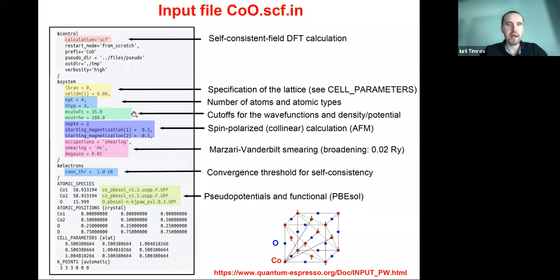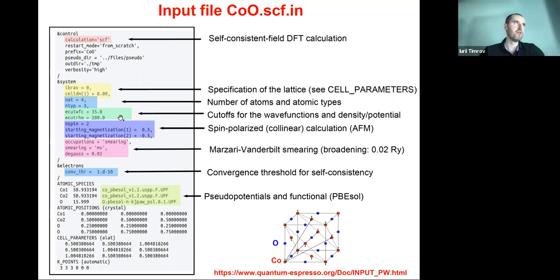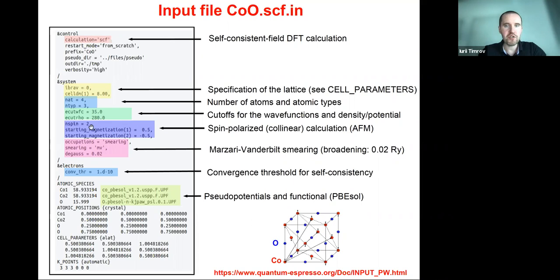In the green box, we highlight the cutoffs. Since Quantum Espresso is based on plane waves, we need to define cutoffs — in this case 35 Rydberg for the wave functions and 280 Rydberg for the density and potential. Essentially, we need to imagine a sphere of some radius: the larger the cutoff, the larger the radius of that sphere. We also specify N-spin equals 2, meaning this is a spin-polarized calculation.